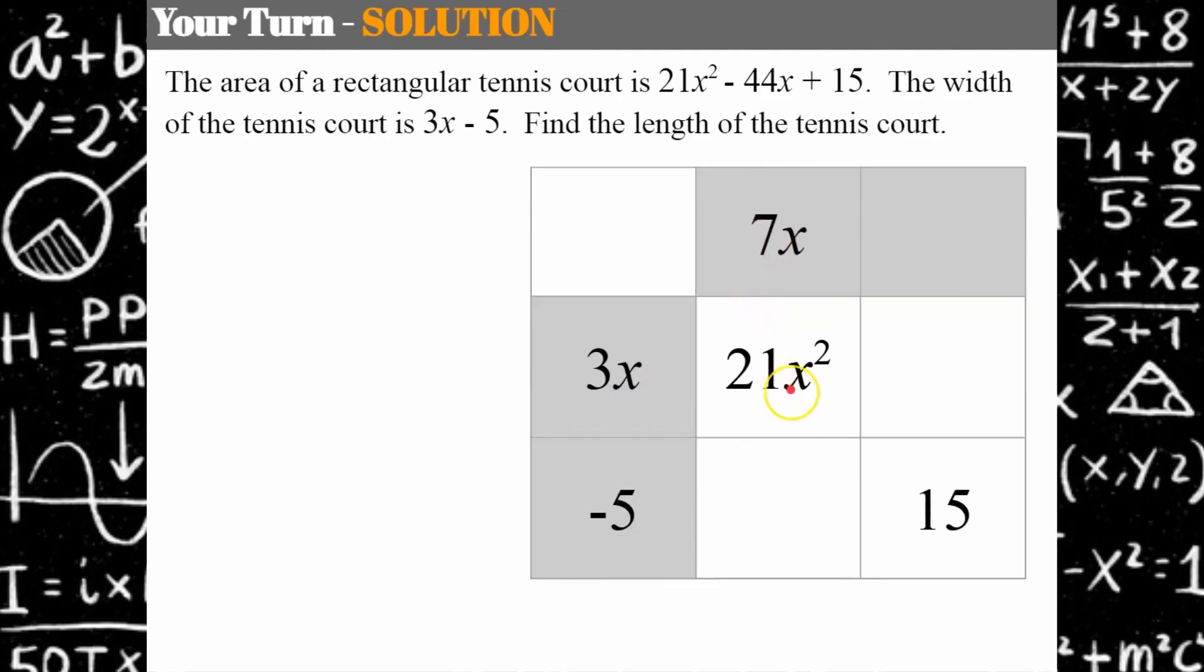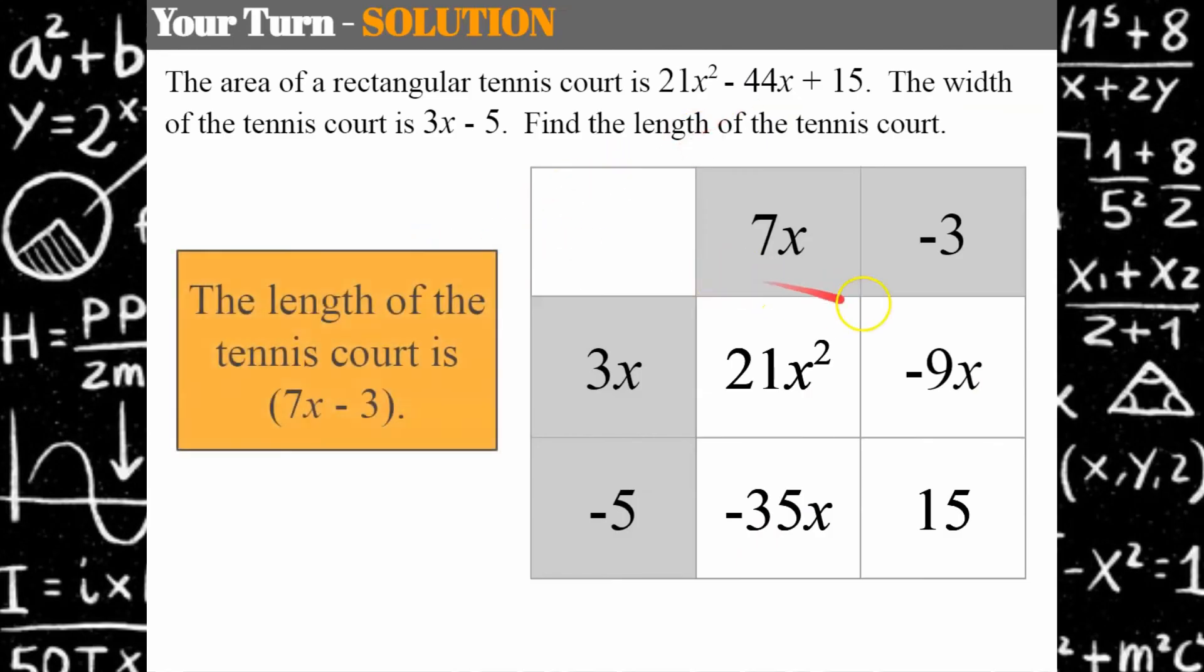3x times 7x is 21x², negative 5 times 7x is negative 35x, negative 5 times negative 3 is positive 15, and negative 3 times 3x is negative 9x. I just check to make sure that negative 35x and negative 9x have a sum of negative 44x, and they do. So the length of the tennis court is 7x - 3.